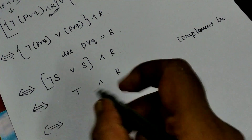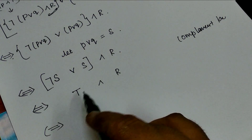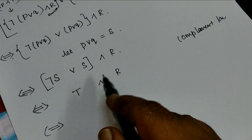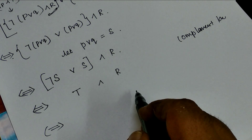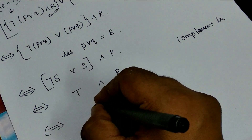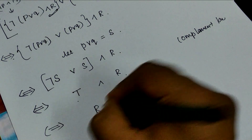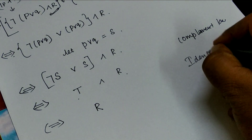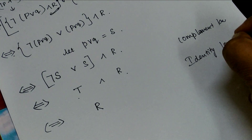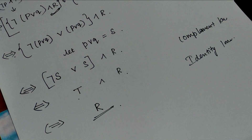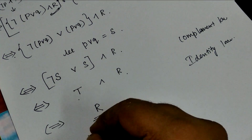So we have proved: true and R. By identity law, true and R equals R — the same statement. Hence the proof.